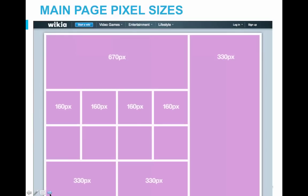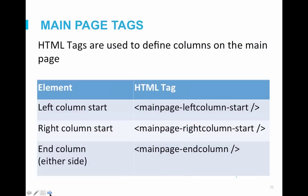On main pages, the article space is referred to as the left column, which is 670 pixels. The right column, which contains main page ads and right rail modules, is 330 pixels. To define these columns, you need to add HTML tags. Each column has a unique start tag — such as 'main page left column start' — but both use the same end tag, 'main page end column.' We suggest you start one column, put everything you want there, then close that column before starting the other one.